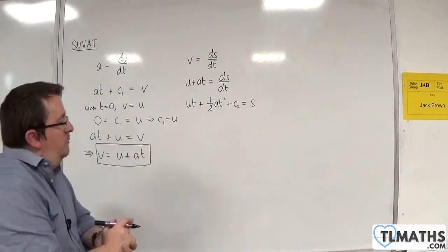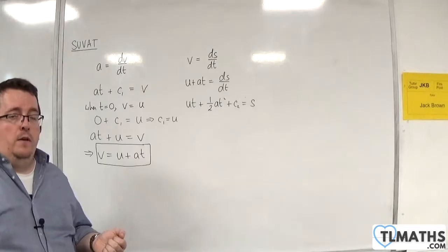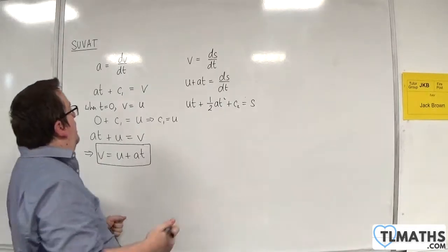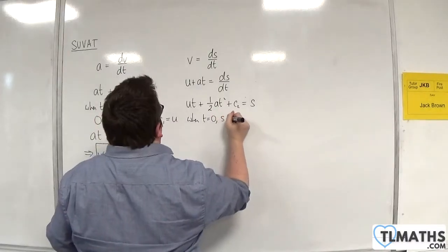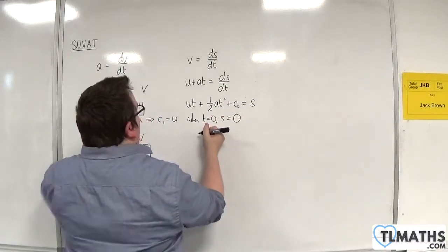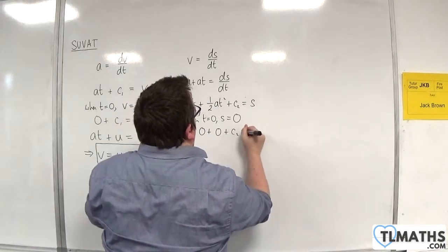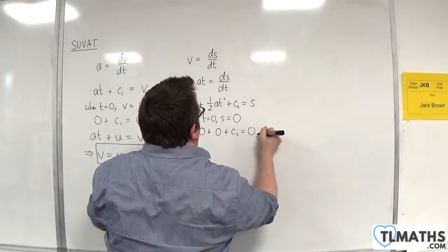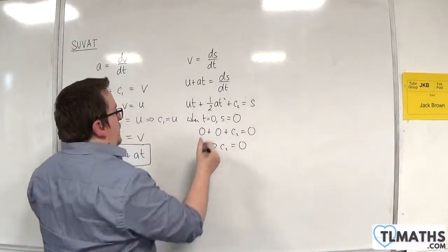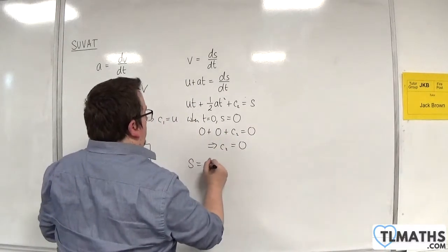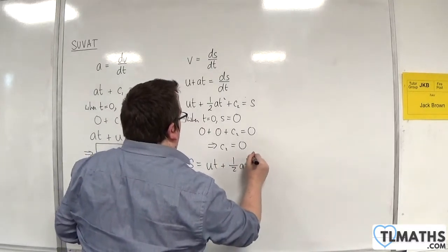Now, what do we know? Well, we know that initially the displacement is 0 — so when t is 0, s is 0. So we'll have 0 plus 0 plus c2 must equal 0, so c2 must be equal to 0. Therefore we've got s = ut + ½at².